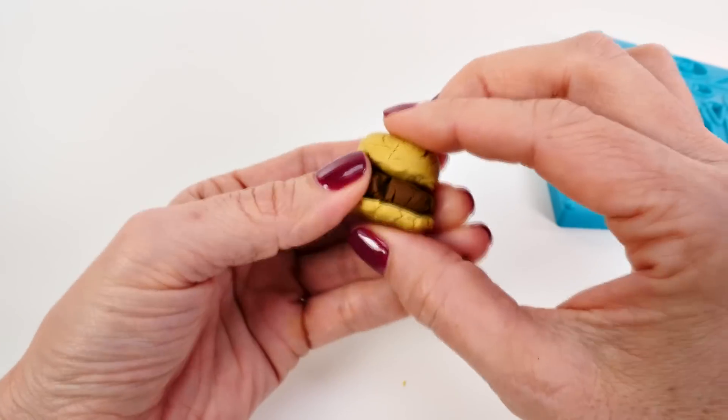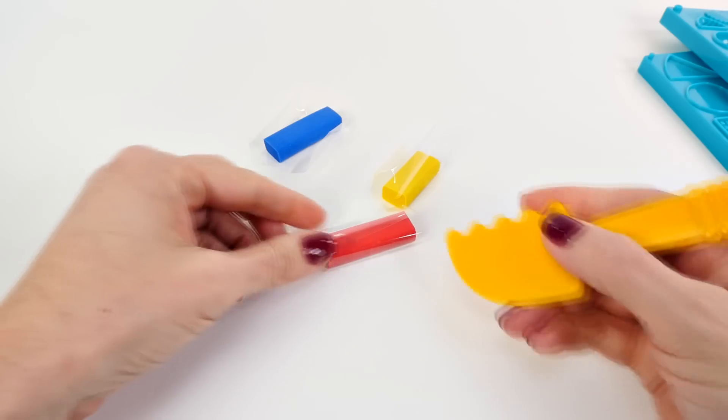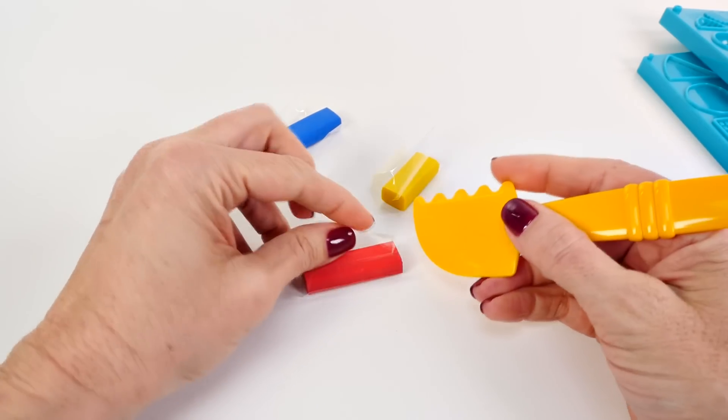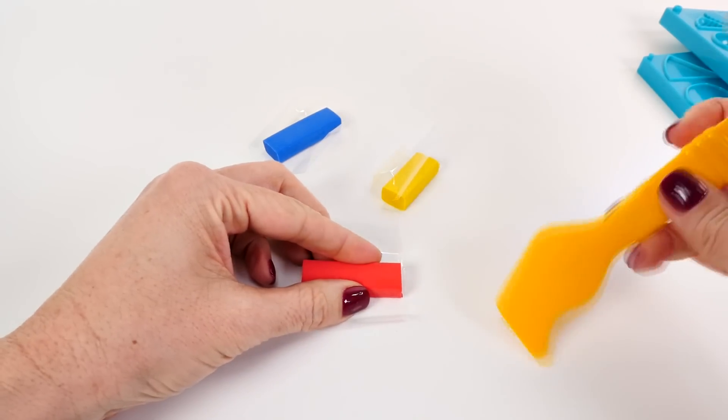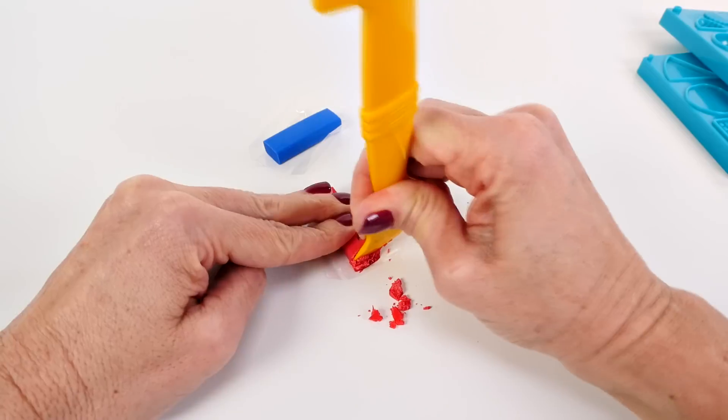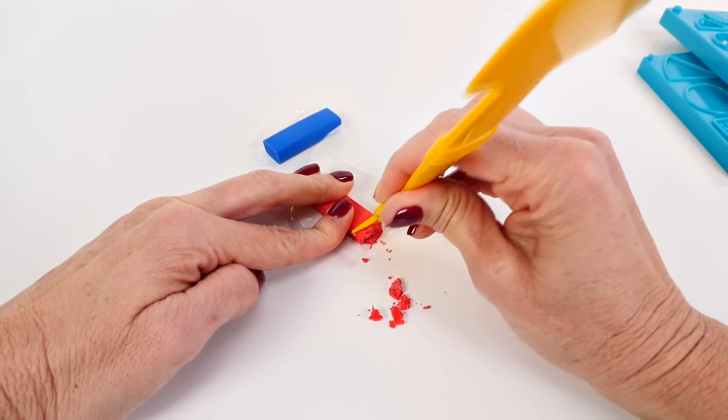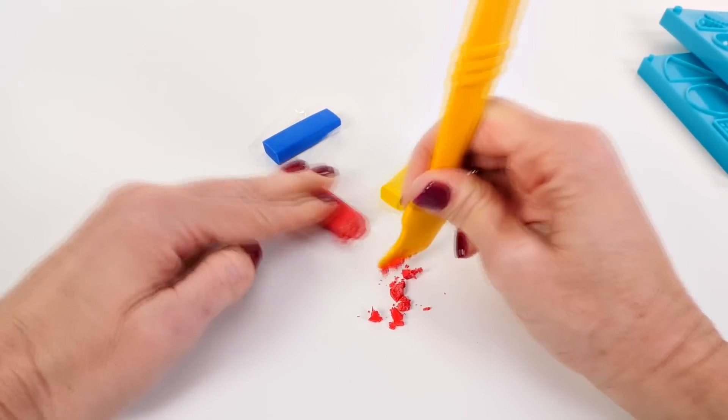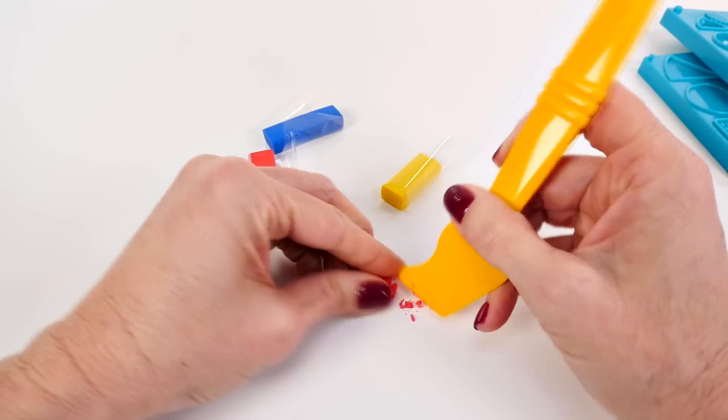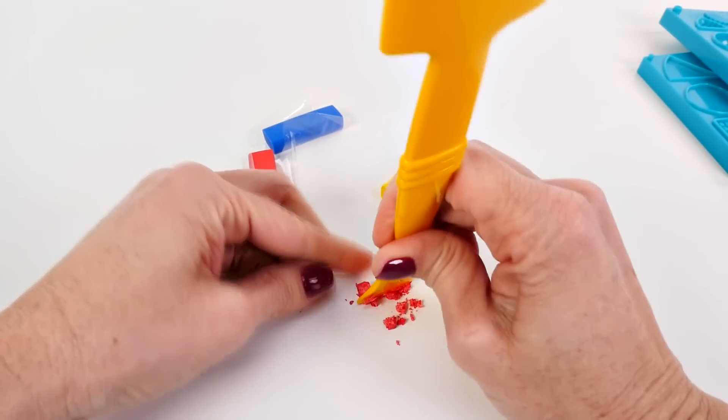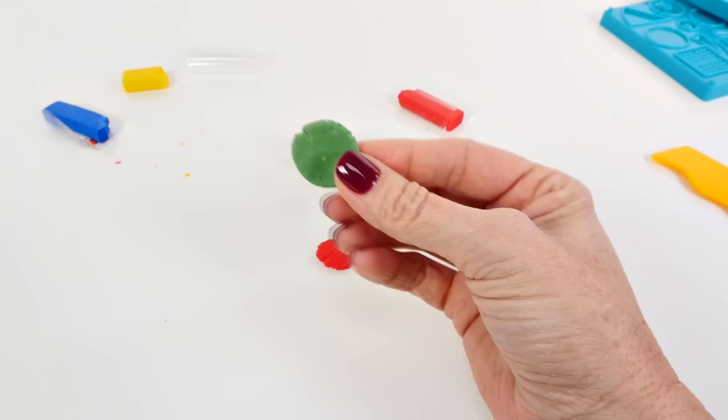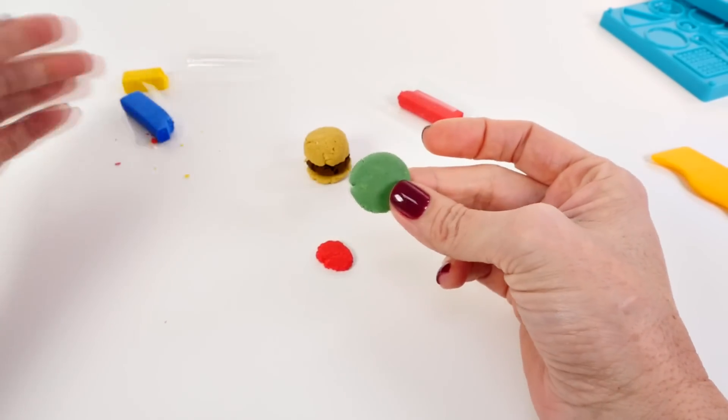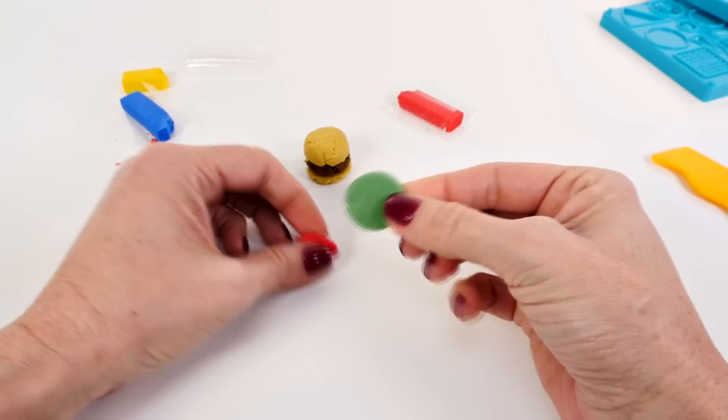To make the tomato I'm just going to cut off a little piece of red. I don't know if the clay is always this hard or mine is just really hard, but this is definitely not that easy. I was able to mix together the blue and the yellow to make green for the lettuce.